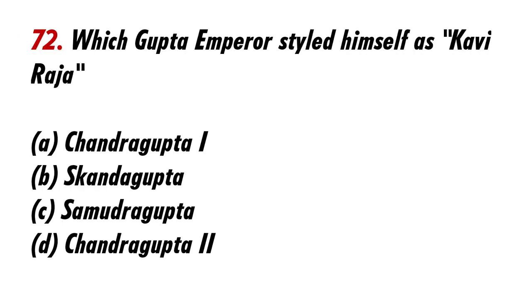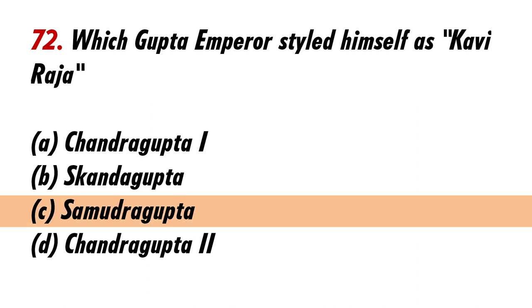Which Gupta Emperor styled himself as Kaviraja? Answer C: Samudra Gupta.